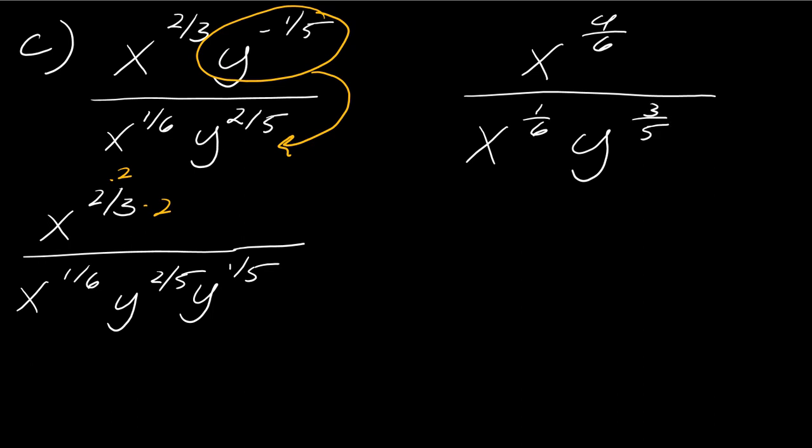Okay, and so now I'm in the home stretch. So 4 6 is bigger than 1 6th. So I can cancel this out and subtract off the 1 6th. So I'm left with x to the 3 over 6, y to the 3 over 5, which can be rewritten as x to the 1 half, y to the 3 over 5.